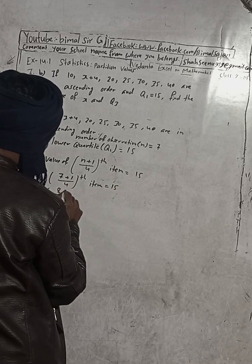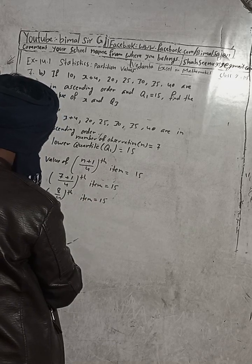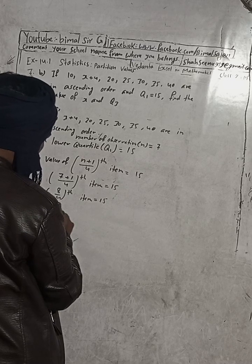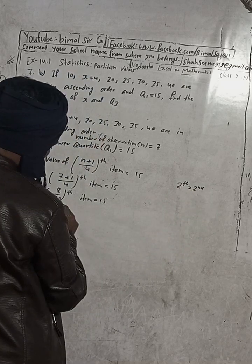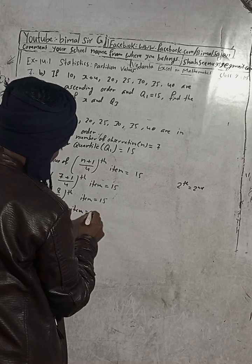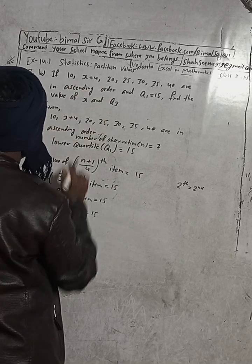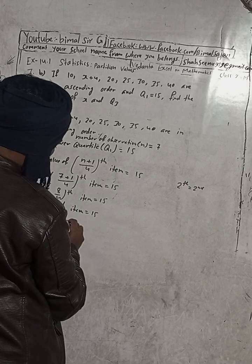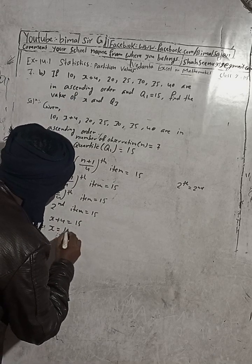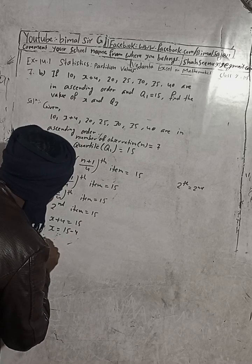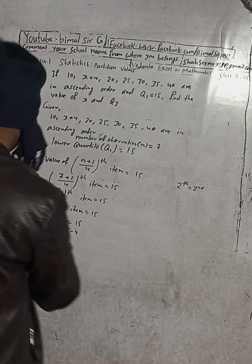Since 8/4 = 2, the 2nd item is equal to 15. The second item in our data is x+4. So x+4 = 15, which implies x = 15 - 4. Therefore x = 11. This matches the answer in the book.